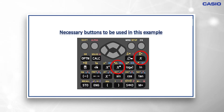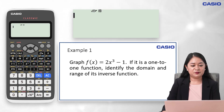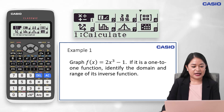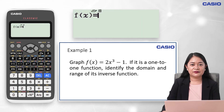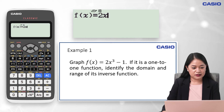Take note of the basic buttons to be used in our first example: these are the x button and the exponent button. To graph this function, we will use the table menu of KASHA ClassWiz. Just press Menu and then 9. We input the function by pressing 2, x, and then the exponent button for cube.